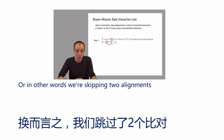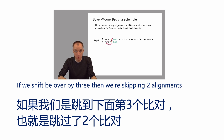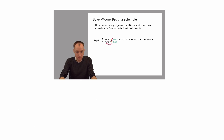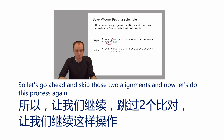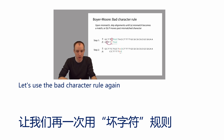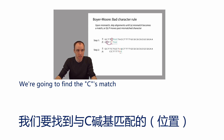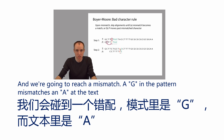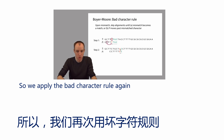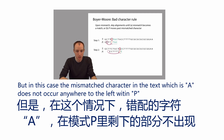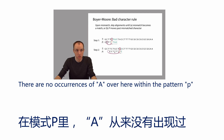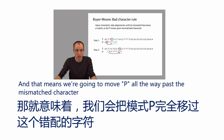In other words, we're skipping two alignments. If we shift P over by three, we're skipping two alignments. So we skip those two alignments and apply the bad character rule again for our new alignment. We find that the C's match, and then we reach a mismatch: a G in the pattern mismatches an A in the text. We apply the bad character rule again, but in this case the mismatched character in the text — which is A — does not occur anywhere to the left within P.